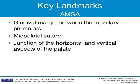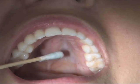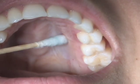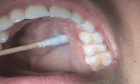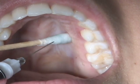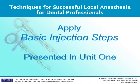The landmarks for this injection include the hard palate at the junction of the horizontal and vertical plates of the palate and the maxillary premolars. Apply topical anesthetic and pressure with a cotton-tipped applicator or other pressure device for a minimum of one minute prior to the injection. A 27 or 30 gauge short or extra-short needle is used, with the bevel turned up toward the palatal bone.